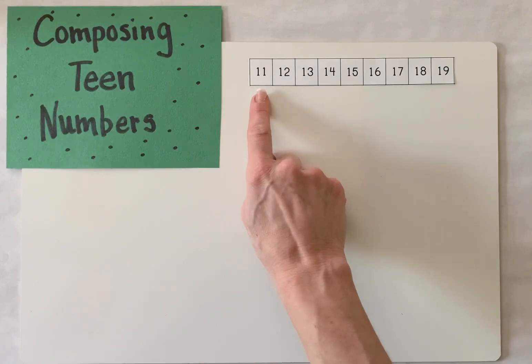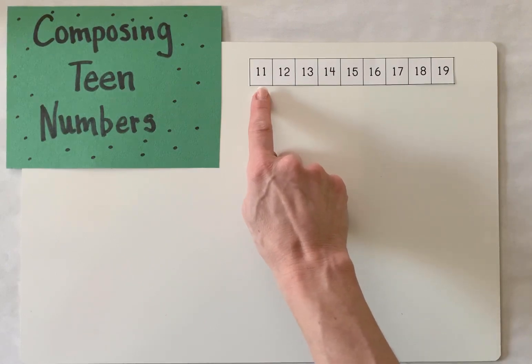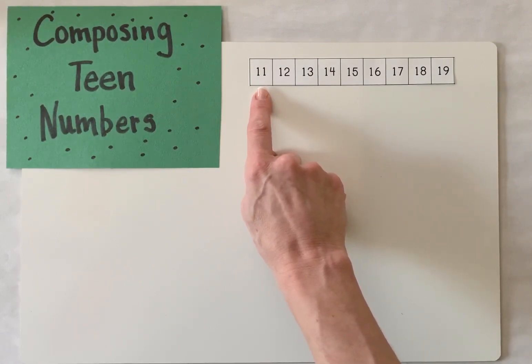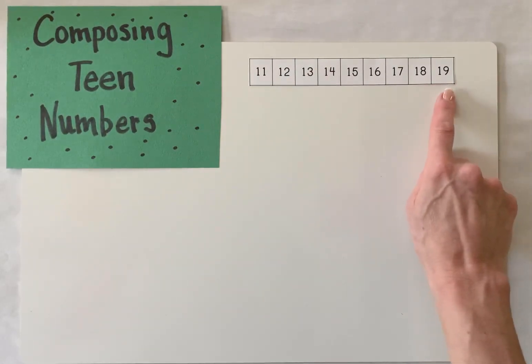First, let's review. Our teen numbers are numbers 11 through 19.